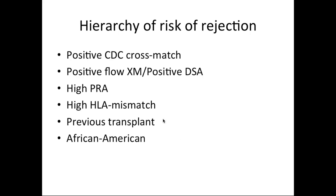In terms of the hierarchy of rejection risk: a positive CDC crossmatch is the highest risk — shown by Terasaki in the 1960s — with 80% risk of immediate hyperacute rejection. A positive flow crossmatch with a positive single antigen bead showing donor-specific antibody is next. Then high PRA, high HLA mismatch, previous transplants, and African American recipient based on available data.